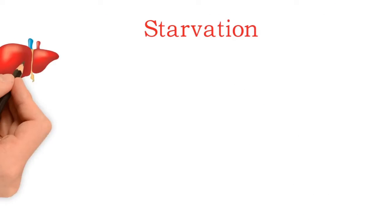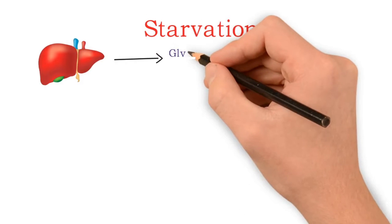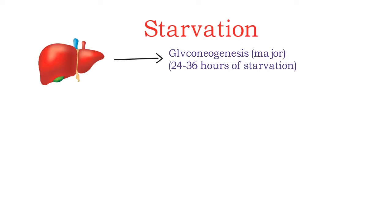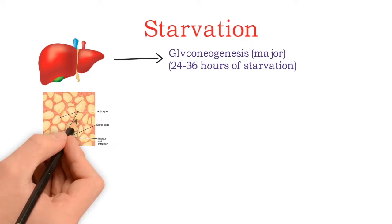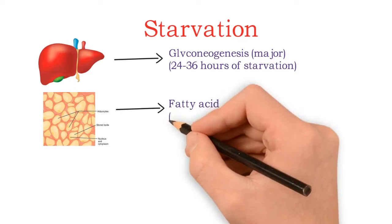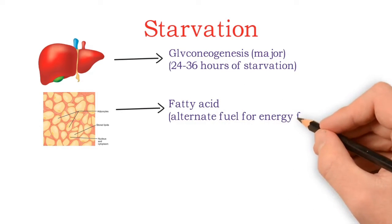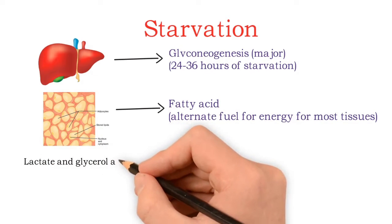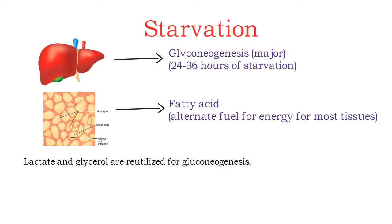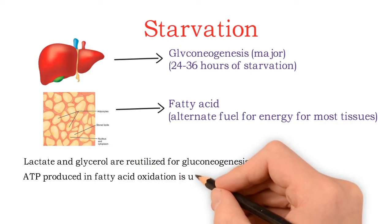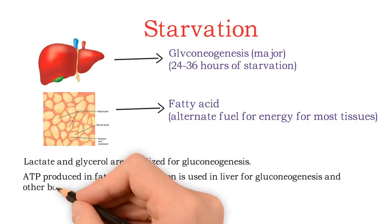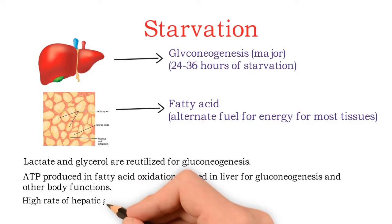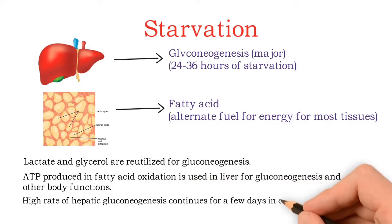In case of starvation, liver gluconeogenesis is the main source of glucose between 24 to 36 hours of starvation. Fatty acids mobilize from adipose tissues and become an alternative fuel for most tissues. Lactate and glycerol are reutilized for gluconeogenesis. ATP produced in fatty acid oxidation is used in the liver for gluconeogenesis and other body functions. High-rate hepatic gluconeogenesis continues for a few days in early starvation.